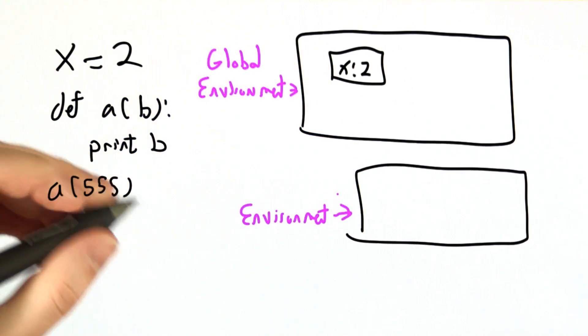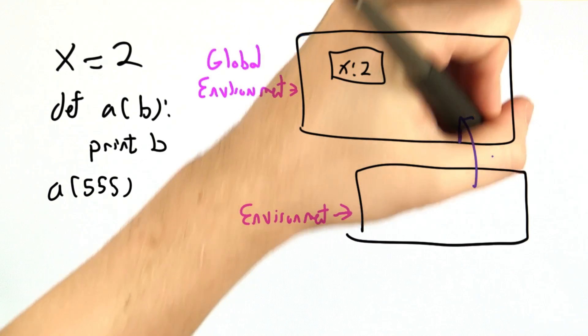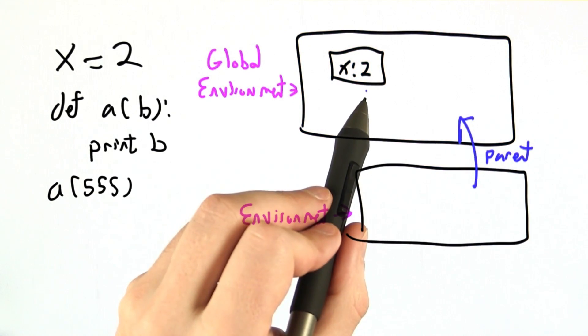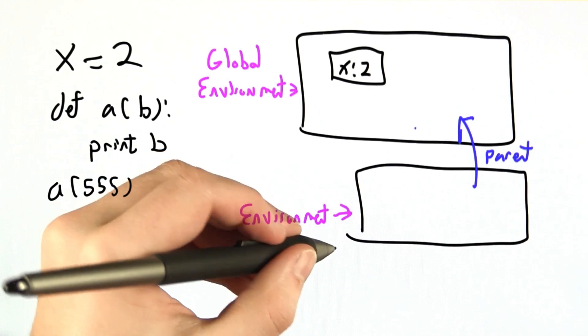Whenever we make a function call, we make a new environment that officially has a parent. This environment knows that it was created in, defined in, this global environment.